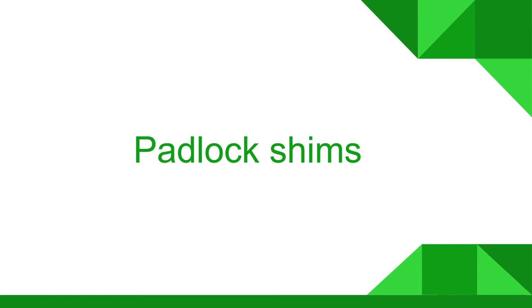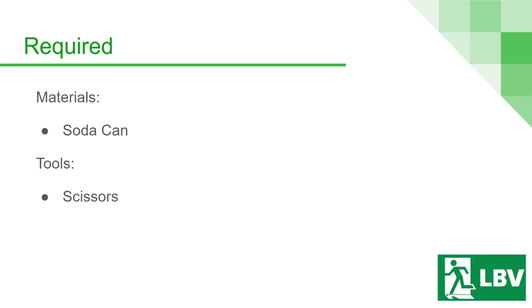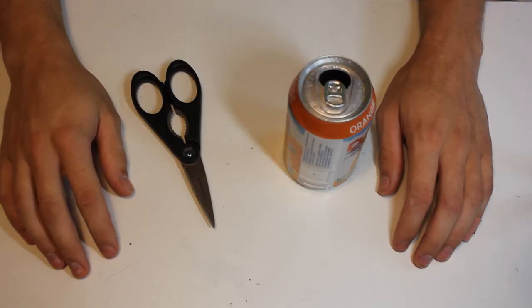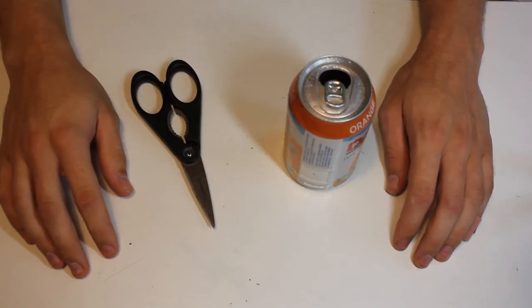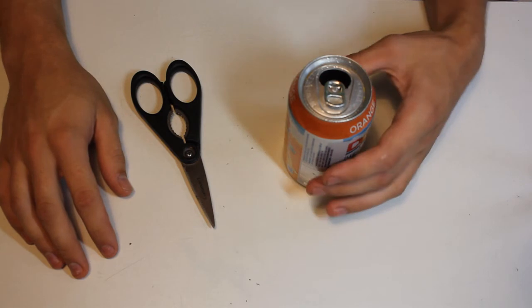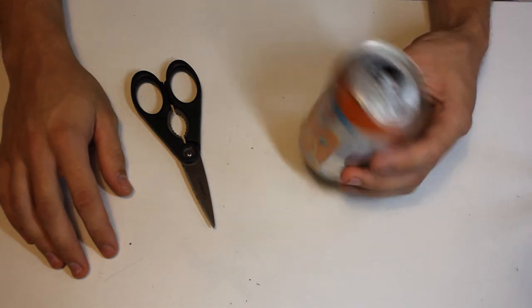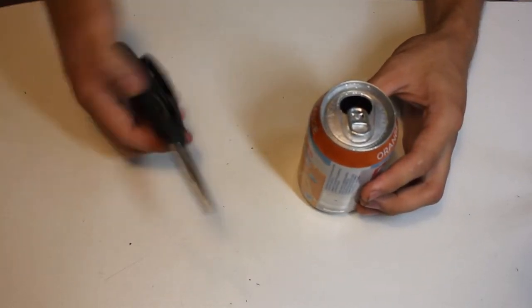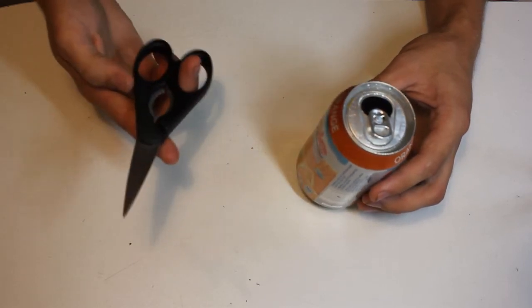Next, we will be making padlock shims. The materials required is a soda can and you will also need a pair of scissors. So, now I'll be showing you how to make padlock shims. These are a very simple thing to do at home. You just need a soda can that's empty and you probably want to wash it out beforehand just so you don't make a mess. As well as a pair of scissors and that's it.